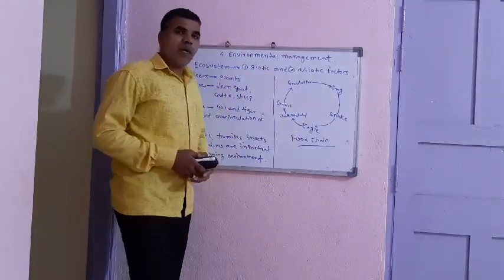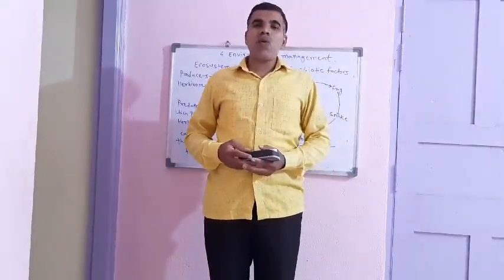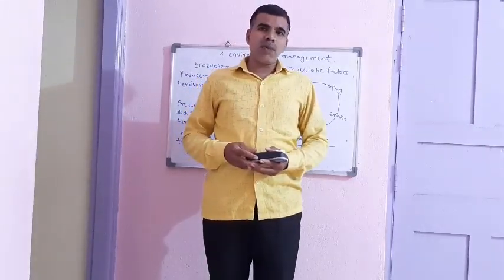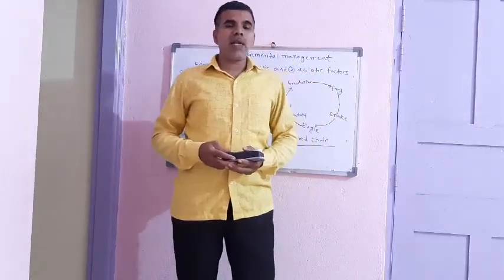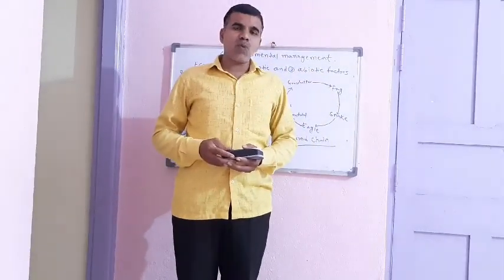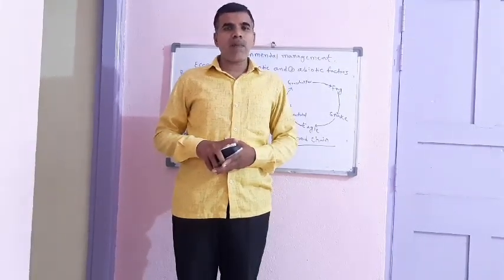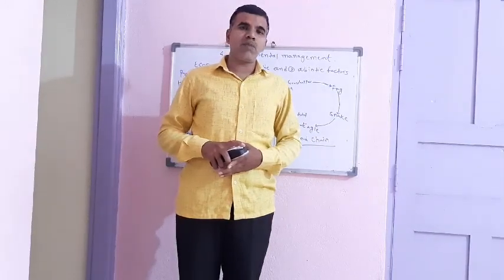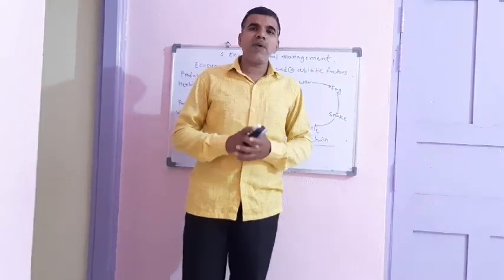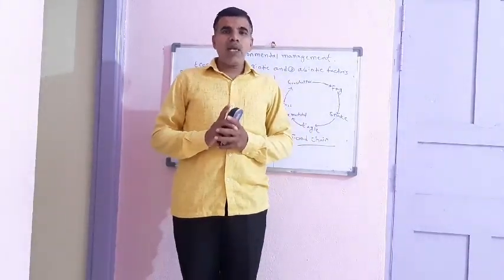From the environment, we first understand the first point: the ecosystem. Ecosystem is the biotic and abiotic factors combined to form an ecosystem. There are interactions between biotic and abiotic factors. Biotic factors means living organisms and abiotic factors means non-living organisms, so they are combined to form an ecosystem.